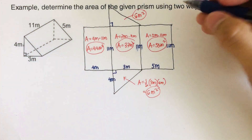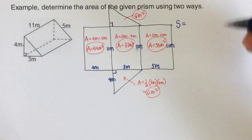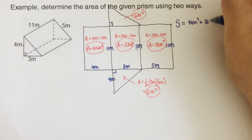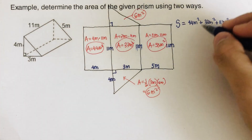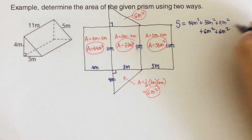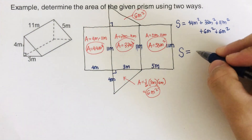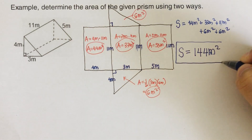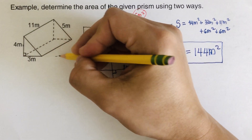The second triangular flap also equals 6 meters squared since the two triangles are congruent. Now the surface area is the sum of all flaps: 44 + 33 + 55 + 6 + 6. Adding all these together gives a total of 144 meters squared. That is the surface area for this triangular prism using the unboxing method.